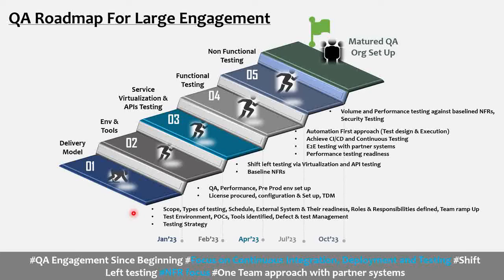Hello friends, welcome. In today's video we are going to discuss how we build a QA roadmap for a large engagement or large program. The very first thing is a delivery model — when we are deriving our delivery model at an engagement or program level, we need to understand what it translates to from a testing perspective. One key thing to understand is: what is my scope?